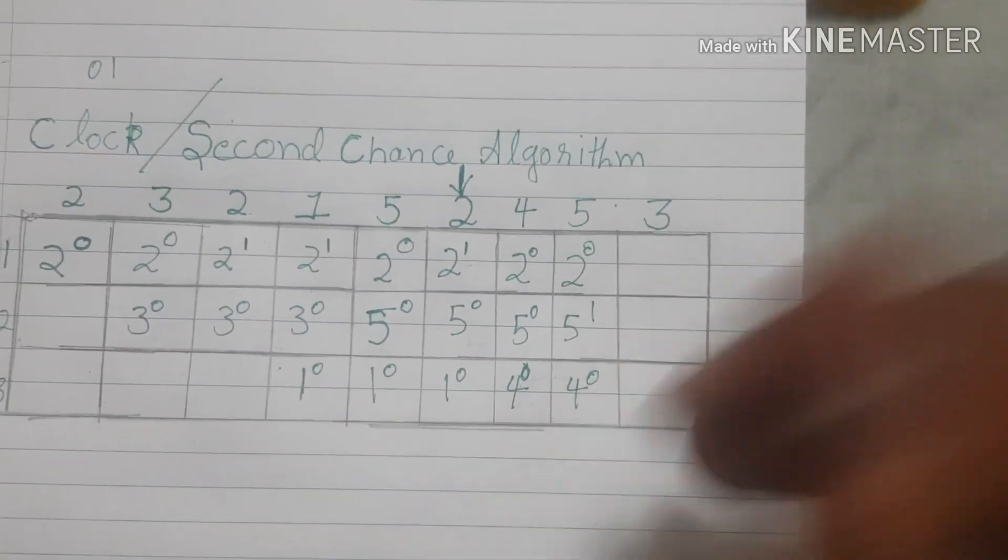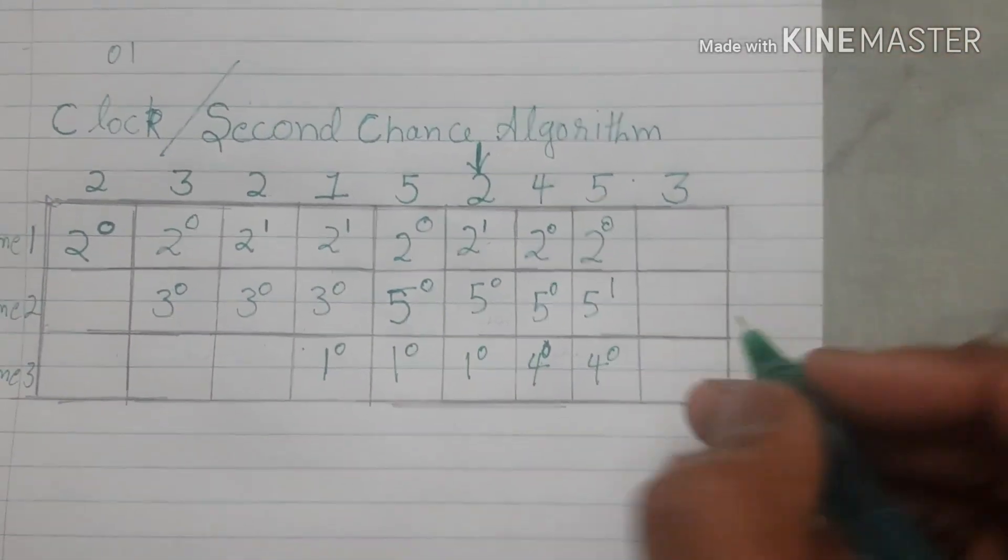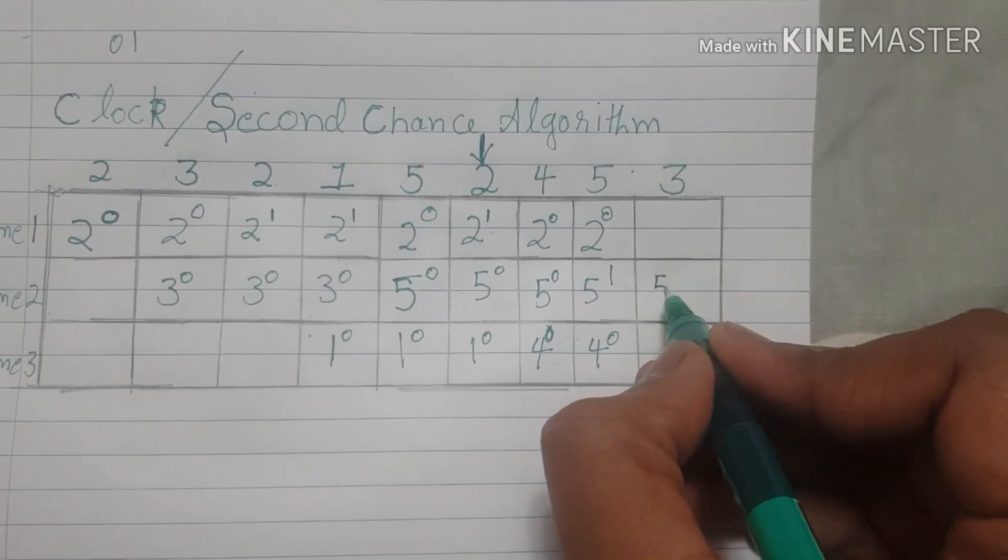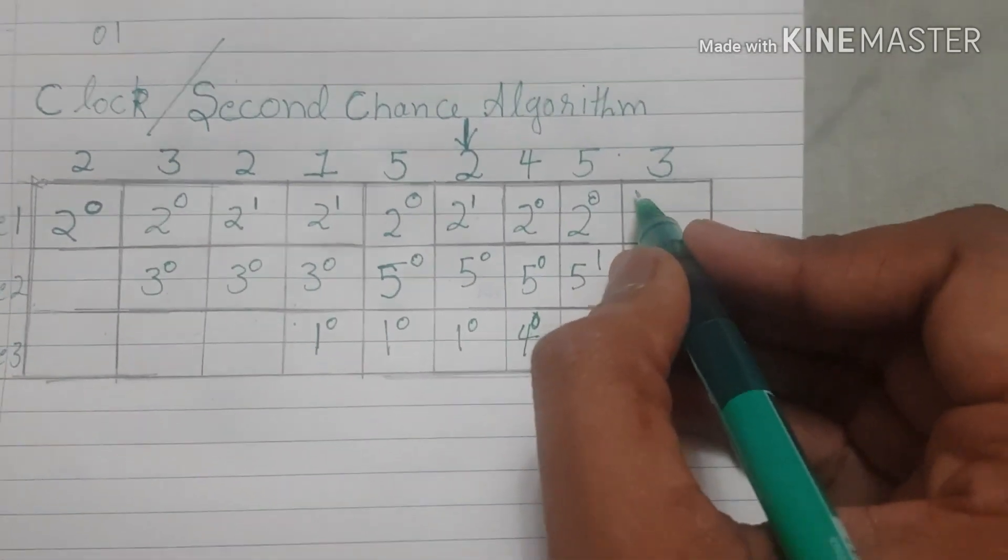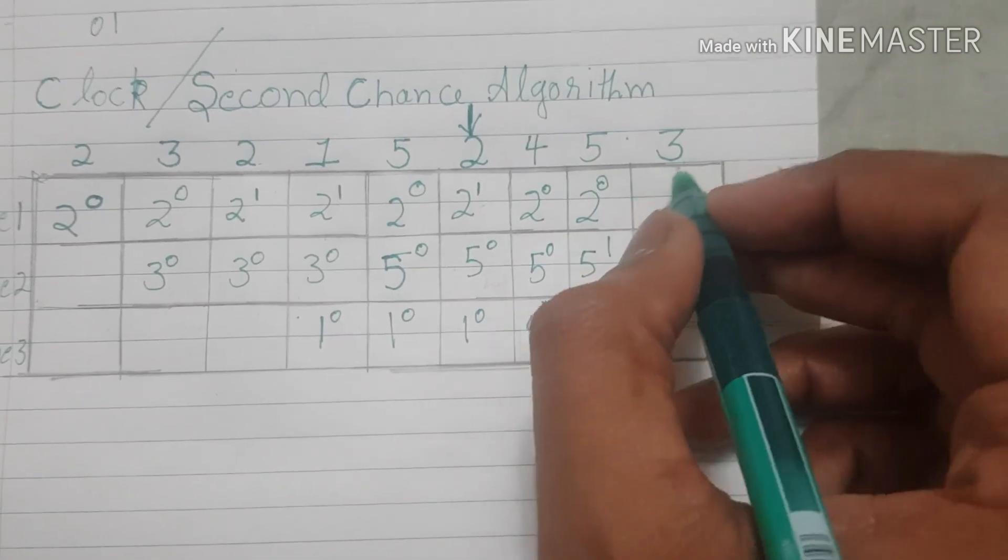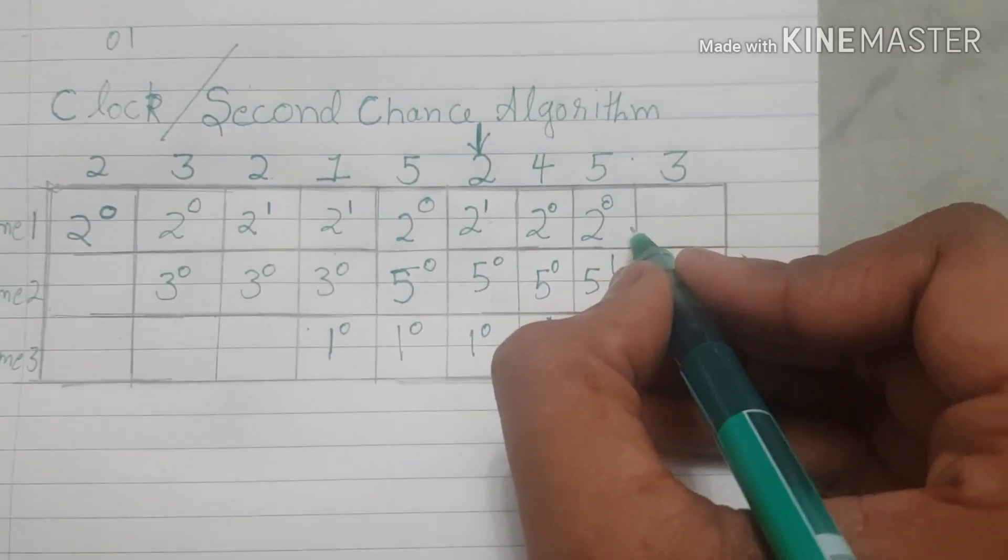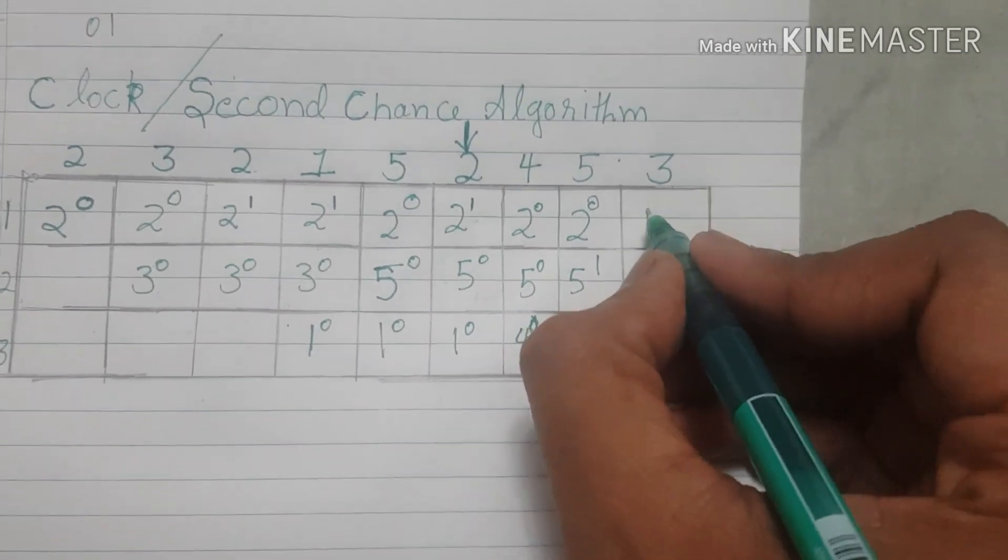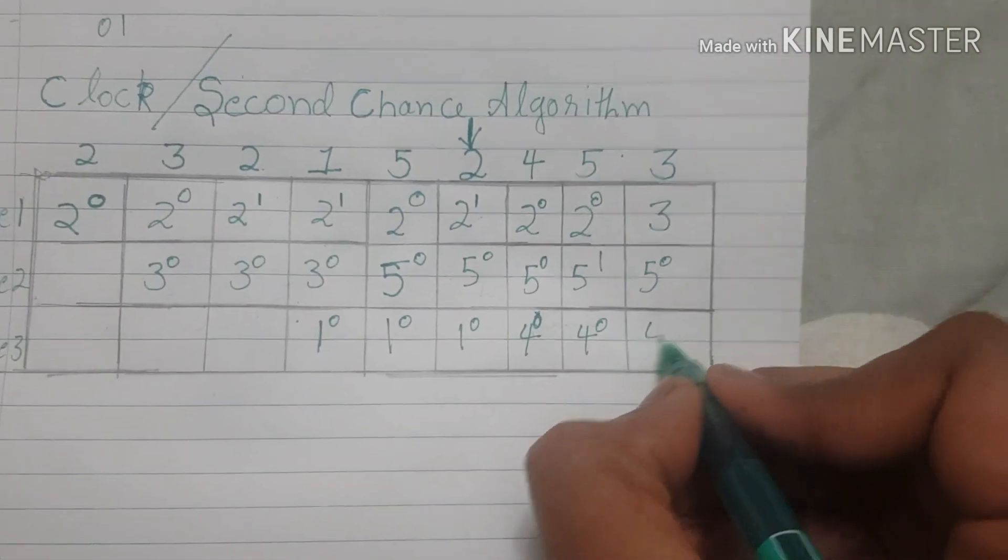So 5 is the first according to first in first out. So we just turn its bit to 0 and move to the next one. Now 2 has the reference bit 0 right now, so 2 will be the one that will be replaced with 3, and 4 remains there.